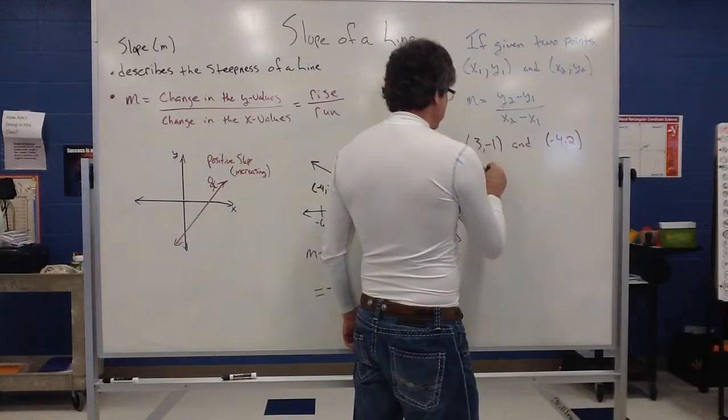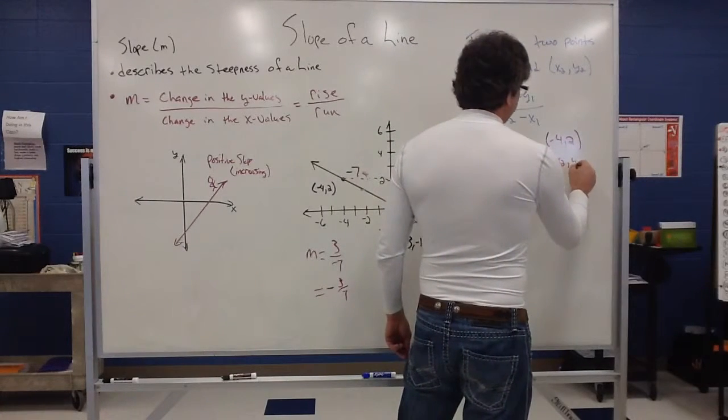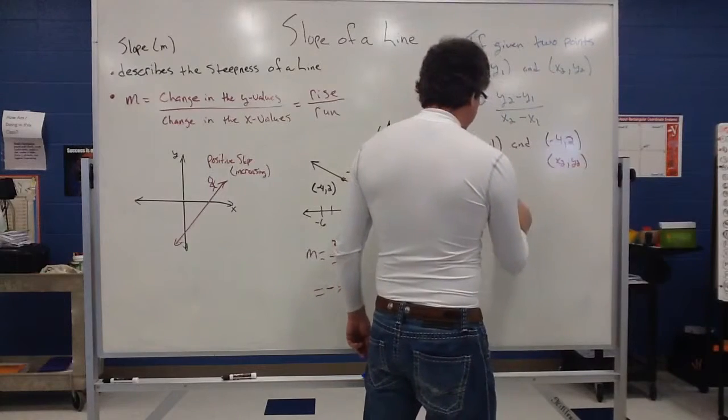So I'm going to call (-4, 2) my second point. So this is going to be my x1, y1. And this is going to be my x2, y2. So using my formula,